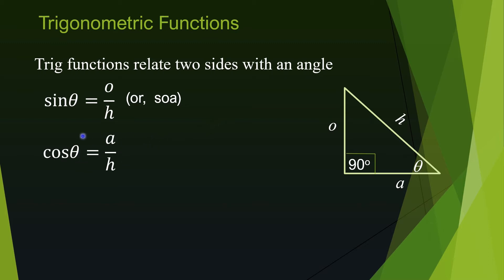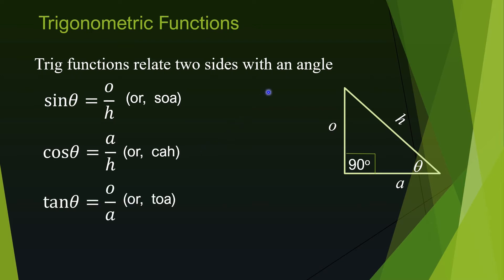Another function that relates the adjacent side with the hypotenuse is called cosine — CAH: C for cosine, A for adjacent, H for hypotenuse. Yet another function is called the tangent function; it relates adjacent and opposite — TOA for obvious reason. Each of these trig functions has three quantities: one angle and two sides. If you know two of them, you can calculate the third using a suitable function.